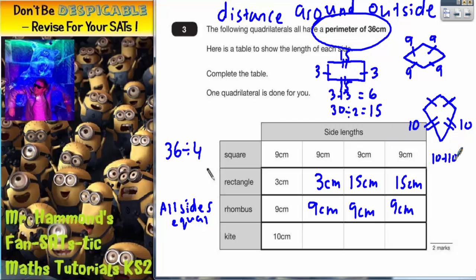10 plus 10 is 20, but we've got an extra 16 centimeters left to get us up to 36. So 16 divided by 2 means the two shorter sides must be 8 centimeters each. So it's 10 and 10 on the long sides, and 8 and 8 on the shorter sides. A quick check: 10 plus 10 is 20, 8 plus 8 is 16, 16 and 20 makes 36, so yes, that is correct. Two of the sides on the kite need to be 10 centimeters, and the other two need to be 8 centimeters.